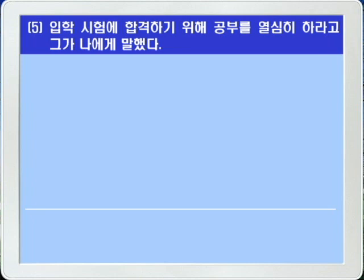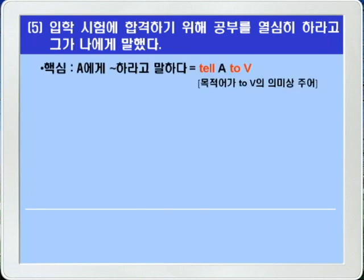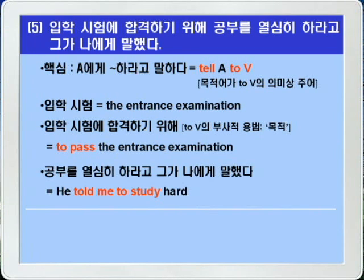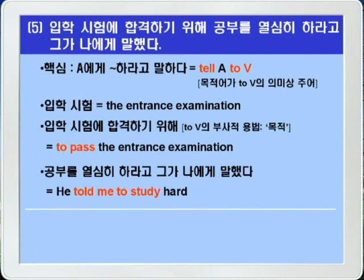5번. 입학시험에 합격하기 위해 공부를 열심히 하라고 그가 나에게 말했다. A에게 뭐뭐 하라고 말하다는 'tell A to 부정사'를 씁니다. 입학시험은 the entrance examination, 합격하다는 pass를 씁니다. 정답: 'He told me to study hard to pass the entrance examination.'